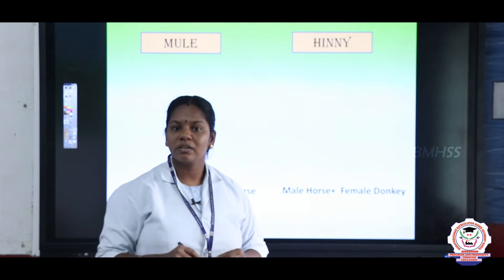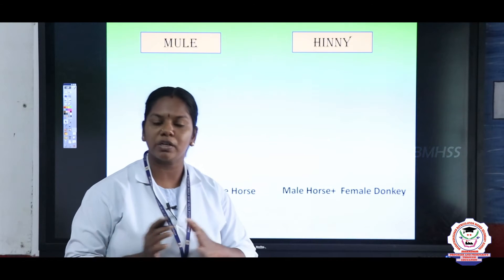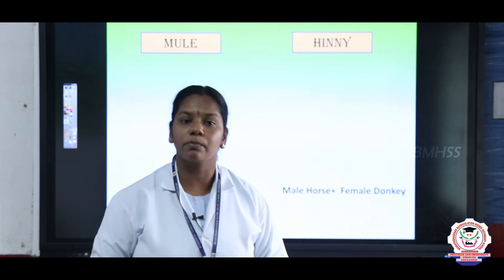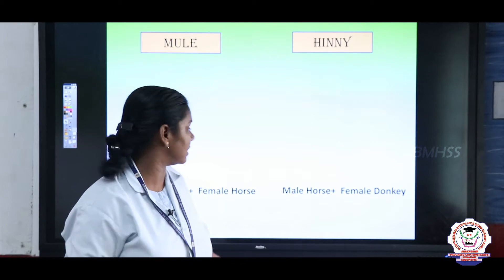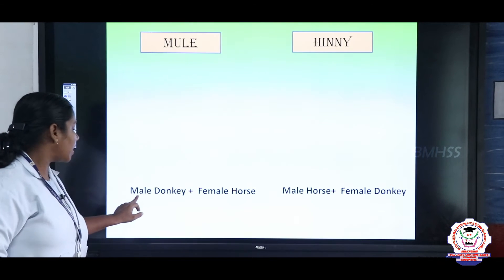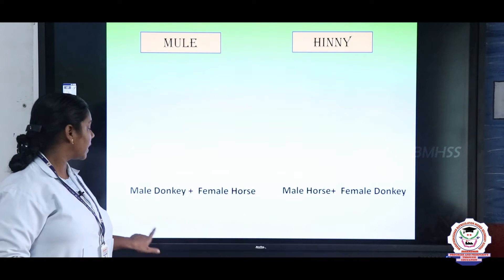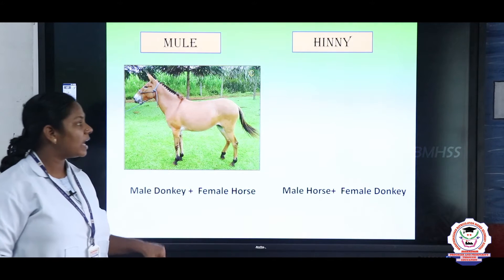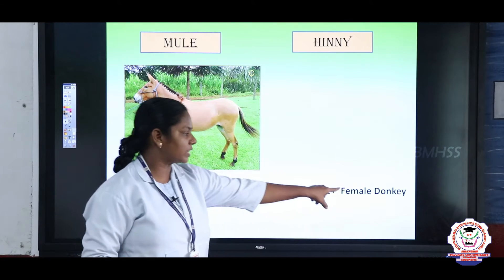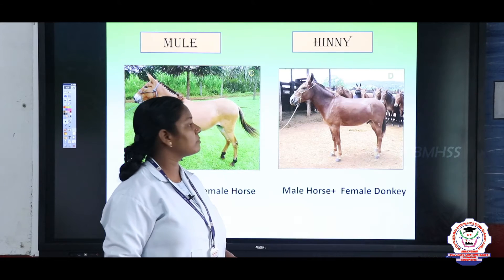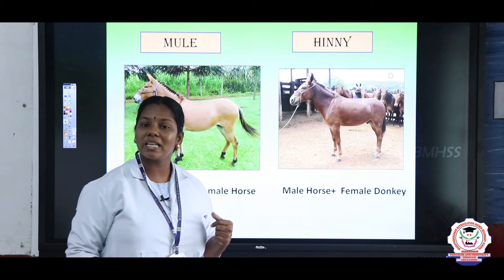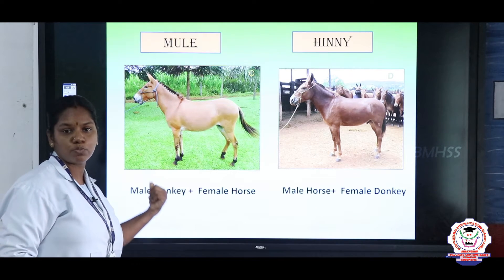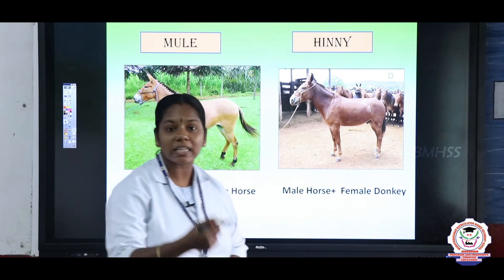However, there are some exceptions. Reproduction between closely related species may result in sterile organisms. Sterile means the organism cannot reproduce. The first example: when the male donkey is paired with the female horse, the organism formed is a mule — called 'koverikai' in Tamil. And male horse with female donkey forms a hinny. Both mule and hinny are sterile organisms.